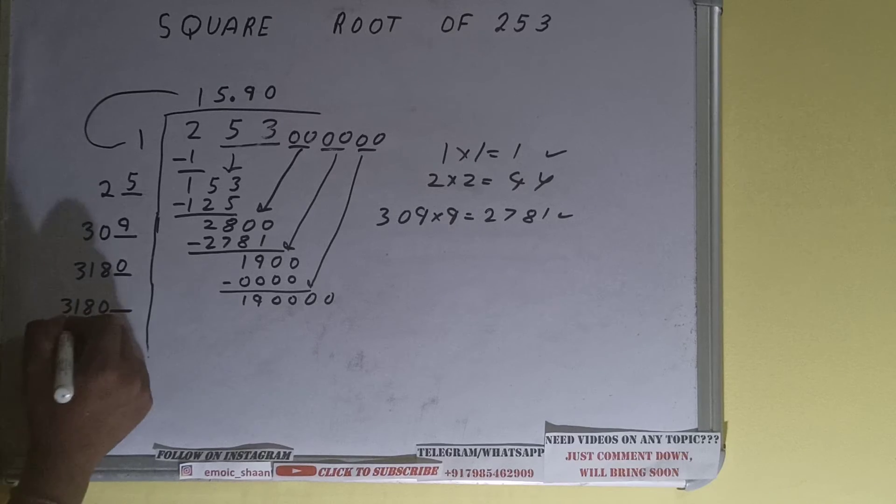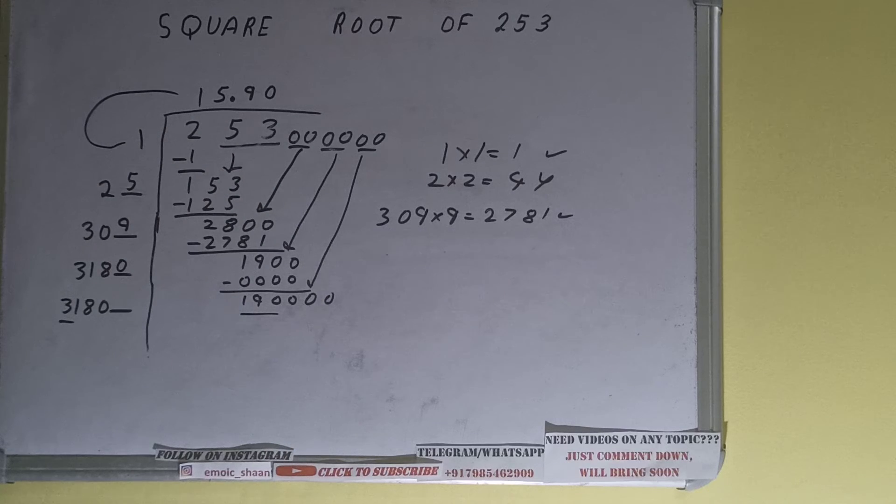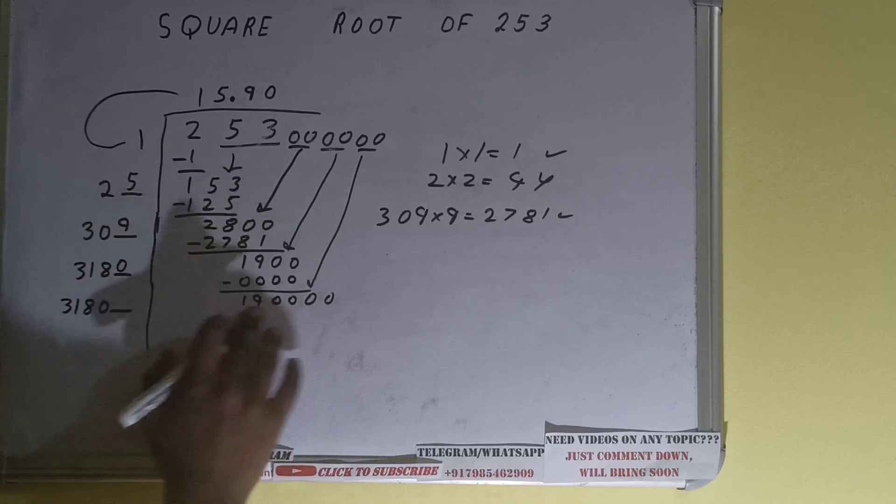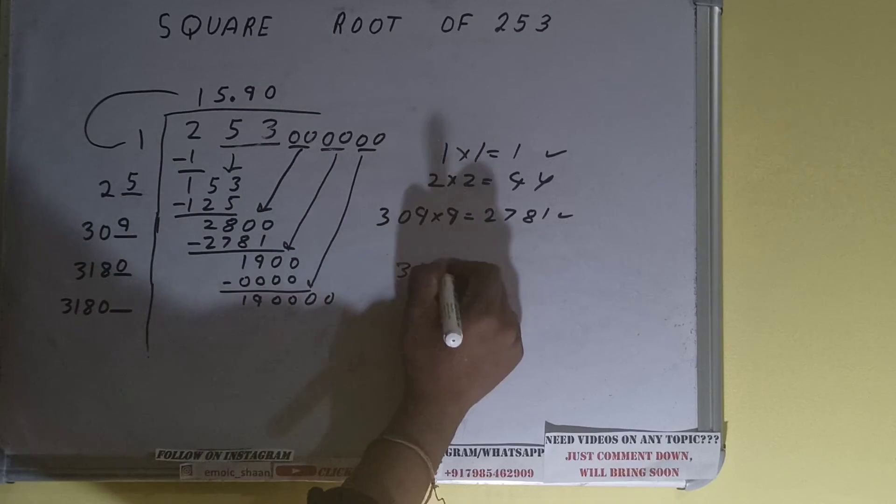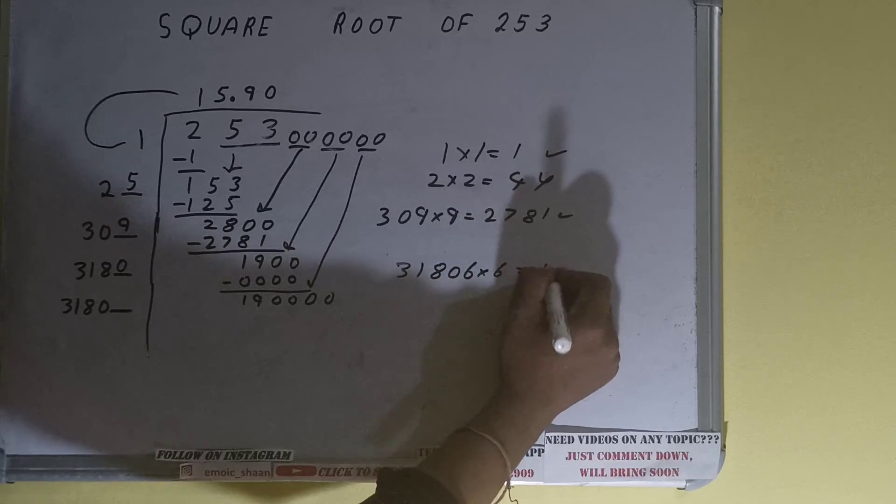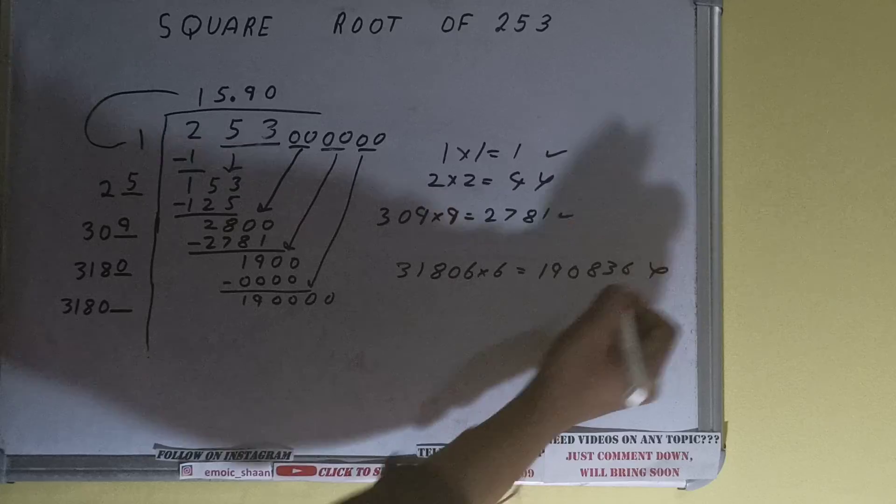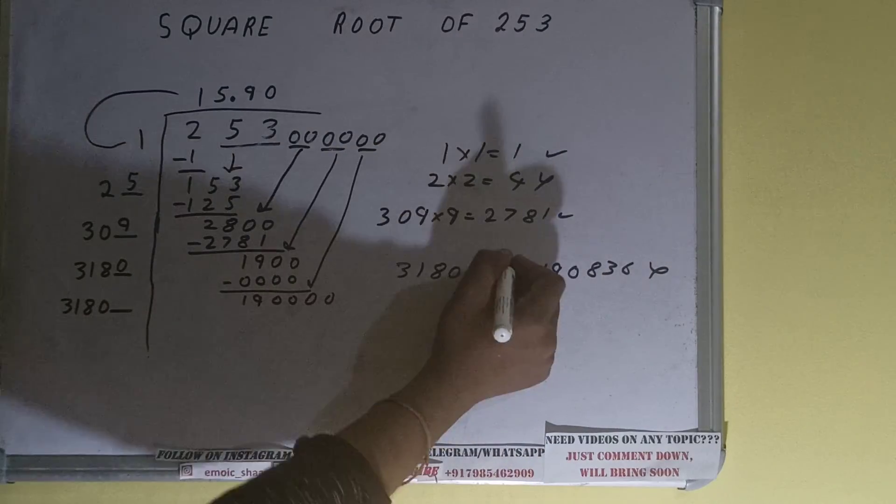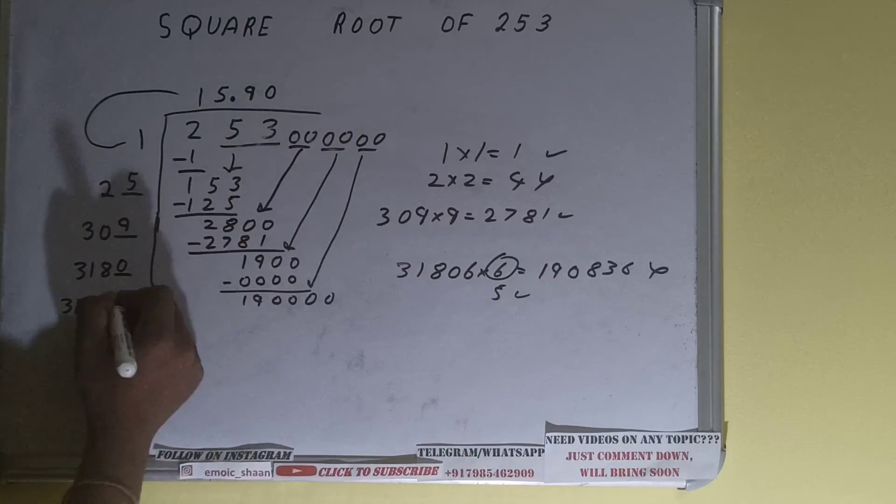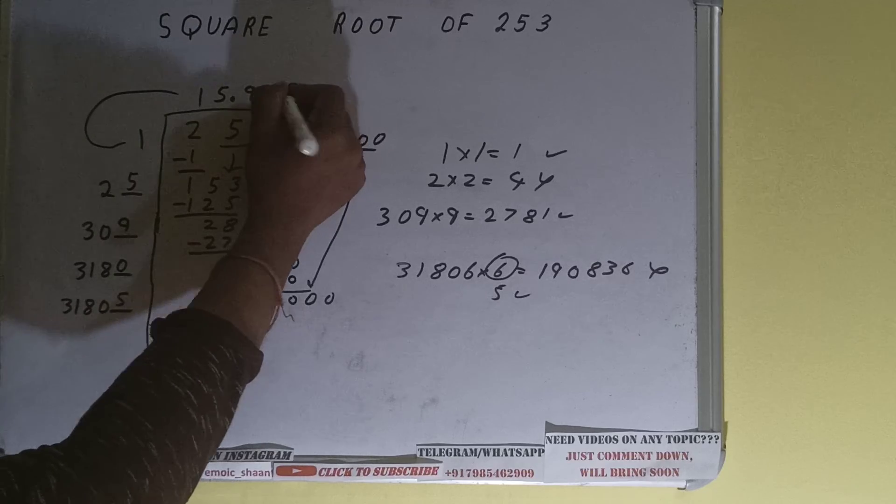Now compare this 31 with this 190. We can try six times. 31806 into 6 we can try, it will be 190836, which is bigger than the number. We cannot use this, but with this we can understand that 5 will surely work. So 5 here and 5 here, but we don't need to calculate.